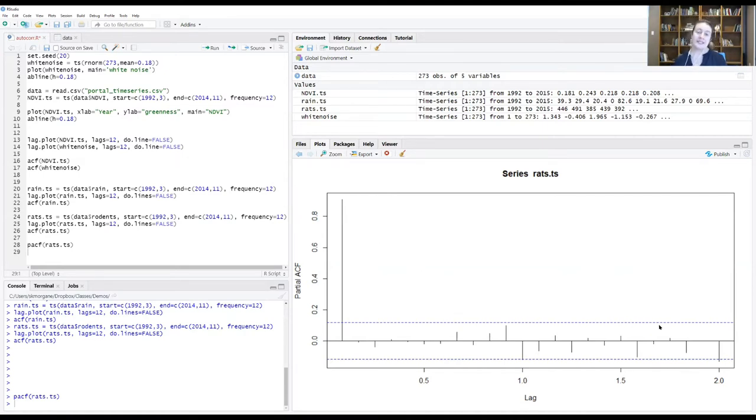And what the PACF is telling us is that almost everything we were seeing in the ACF function is that echoing effect of a really strong correlation at a time lag of one month. And that was creating correlation structures within our data.